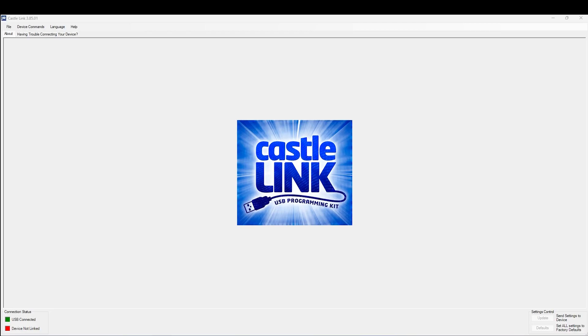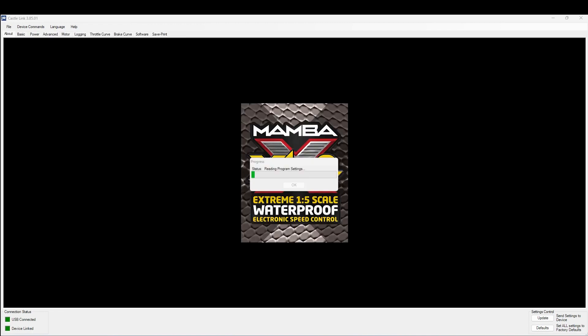And of course, this is for a Castle Creations electronic speed control. Here is the Castle Link software. I'm going to plug our ESC in here today to our computers. So this is the connection being made now. It's reading the information and it tells us that we have the Mamba XLX2 connected up to our computer. This is true. Everything looks good so far.